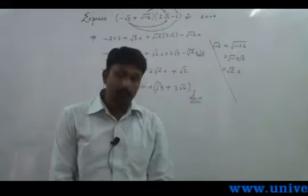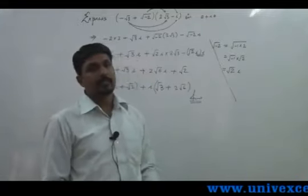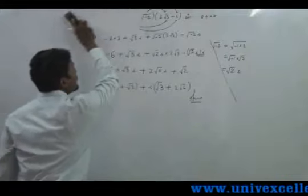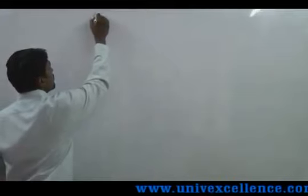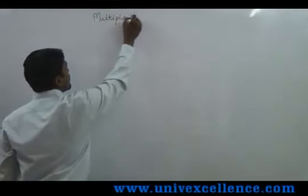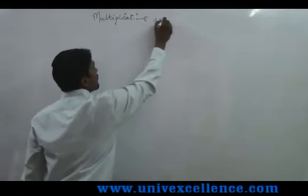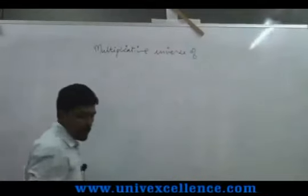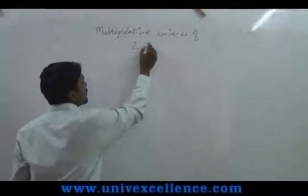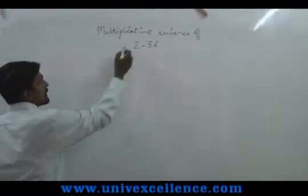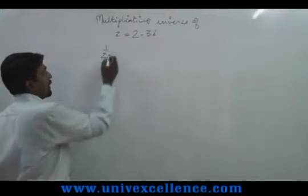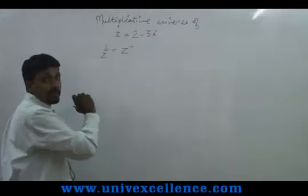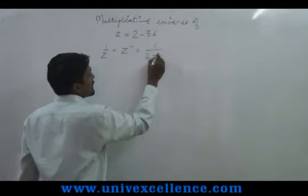The question is: find the multiplicative inverse of 2 minus 3i. Let us take z = 2 - 3i. Therefore one upon z is called the multiplicative inverse, so z inverse equals one upon (2 - 3i).